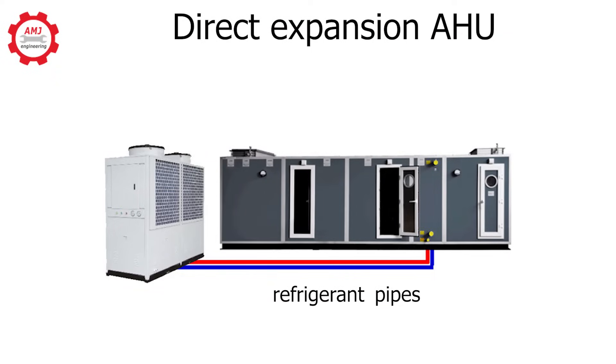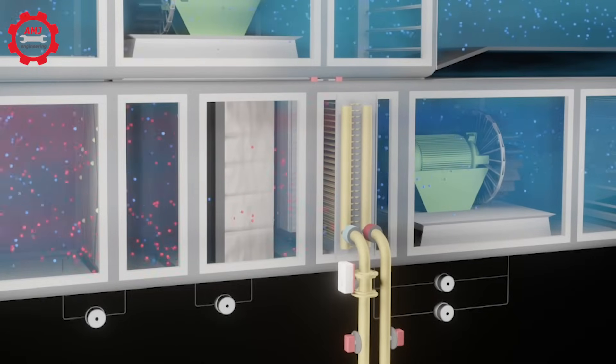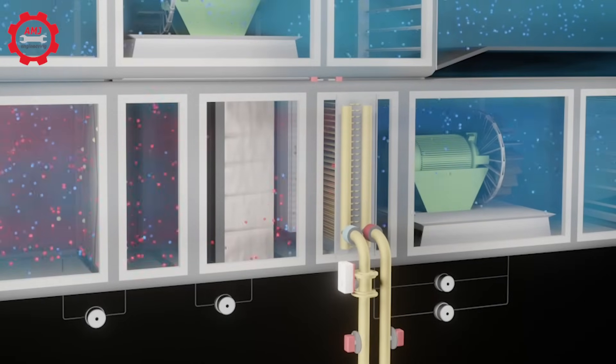Direct expansion air handling units have refrigerant that flows through the coil. The refrigerant directly exchanges heat with the air blown by the fan.